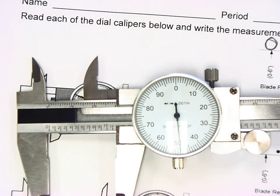By following these steps of determining the whole inch, the tenth of an inch, and the thousandths of an inch, you will be able to read a dial caliper.